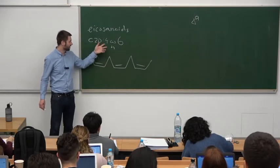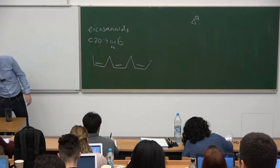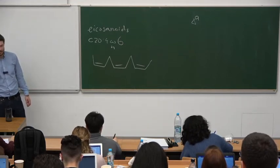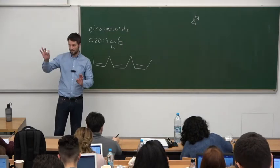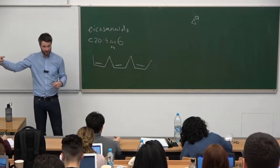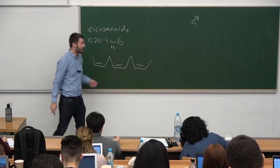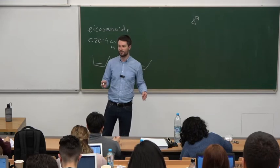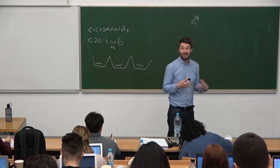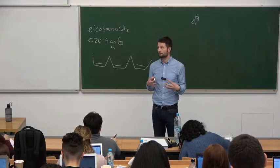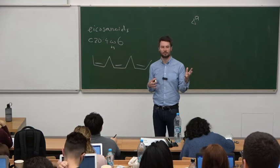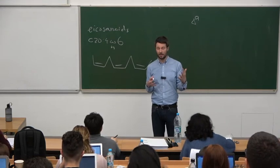Going back: arachidonic acid can be synthesized starting from linoleic acid. Linoleic acid is C18:2, omega-6. It can't be omega-3 because we need to synthesize an omega-6 acid — once we have omega-6, we can only make omega-6 acids; once we have omega-3, we can only make omega-3 acids, because there's no way to place a double bond anywhere else. So it's omega-6 because we need to make an omega-6 acid.